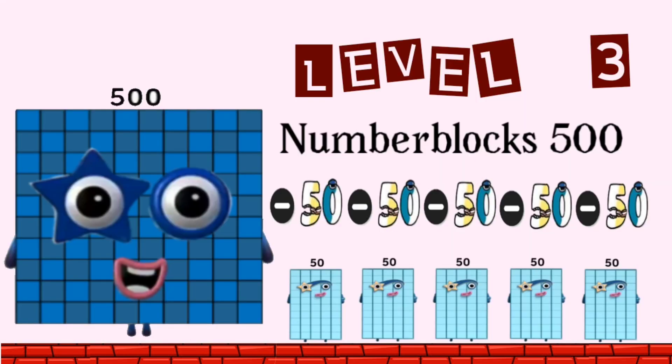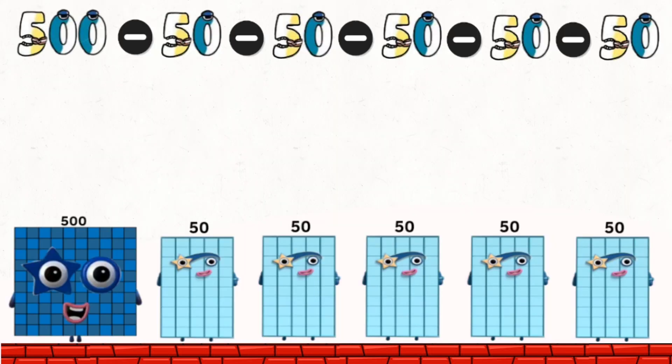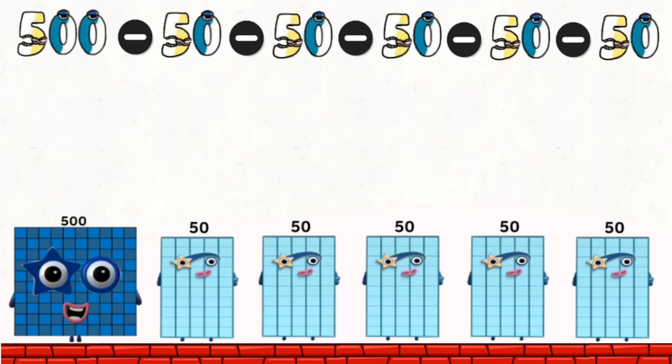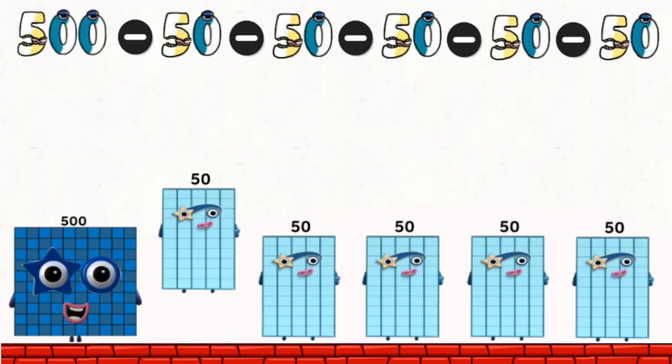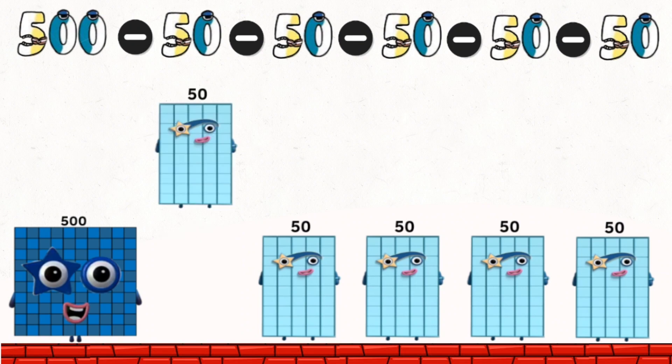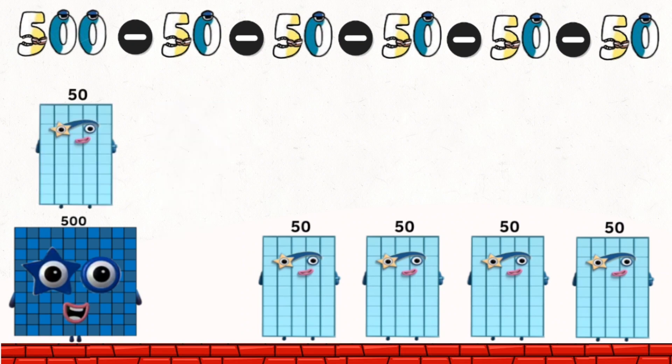Level 3. Number blocks: 500 divided by 50. 500 divided by 50 equals 450.